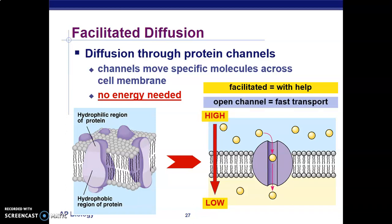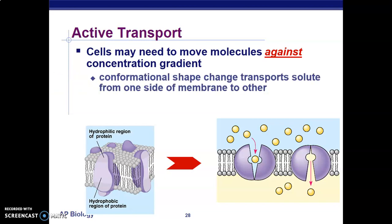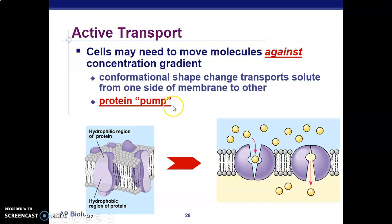Active transport is the movement of molecules against a concentration gradient, therefore requiring energy. A conformational change transports solutes from one side of the membrane to the other. A protein pump — an ATP pump — provides the energy needed to move molecules from a low concentration region to a high concentration region, against the concentration gradient.